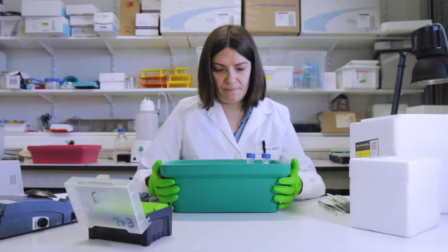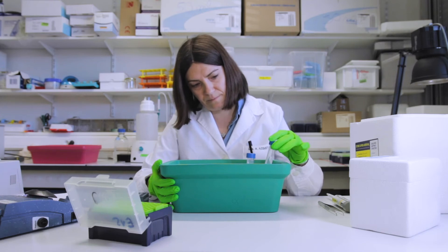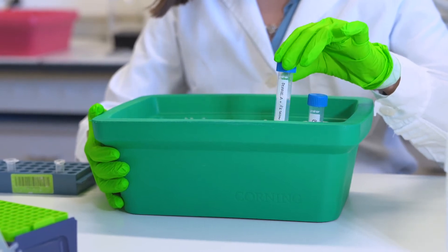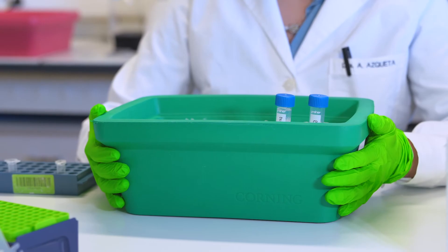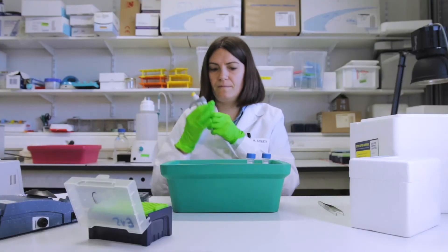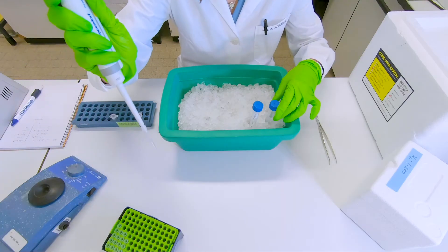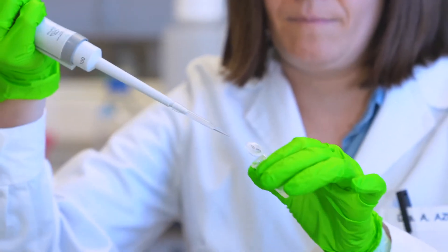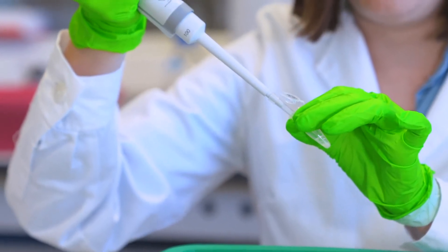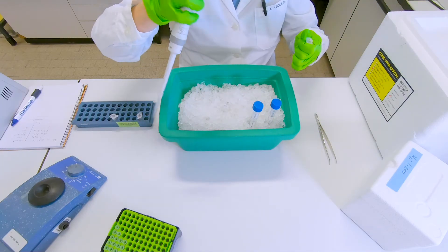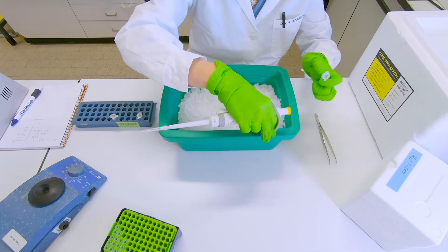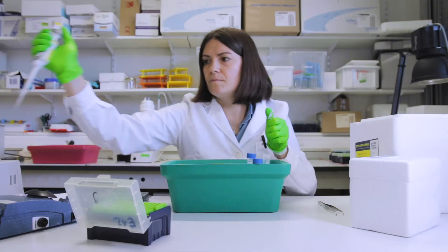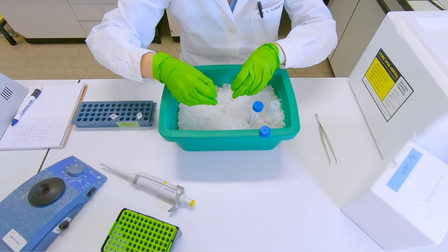So first we're going to add buffer A. It's best to prepare buffer A cold. And in parallel, you can also prepare upfront buffer A together with 1% of tritone. So we start off with the buffer A. We have a cell pellet of 5 million cells, to which we will add 50 microliters of this buffer A. We usually work with 30 milligrams of ground tissue. And to this 30 milligrams of tissue, you add 100 microliters of your buffer A. Both of them will be vortexed.